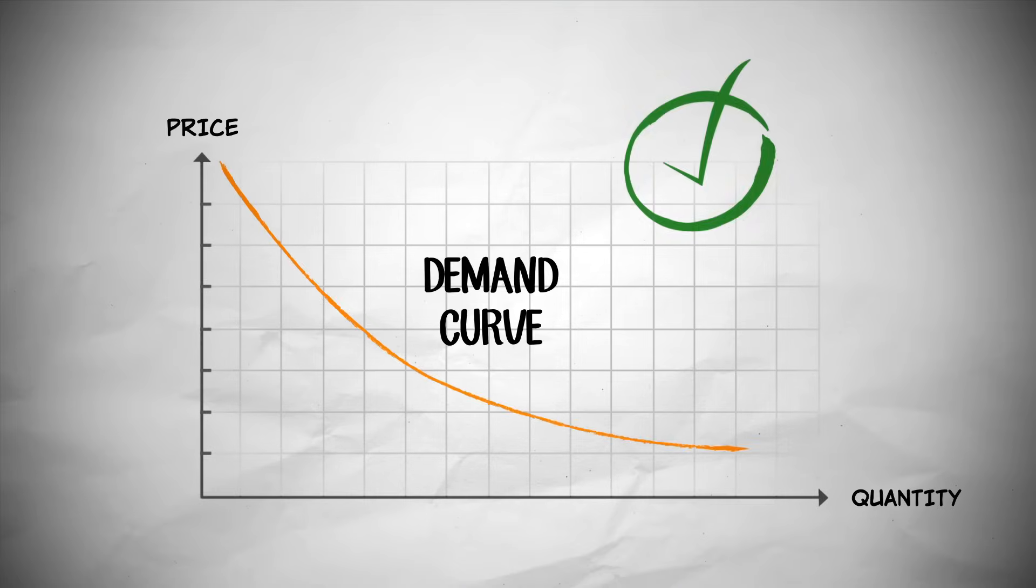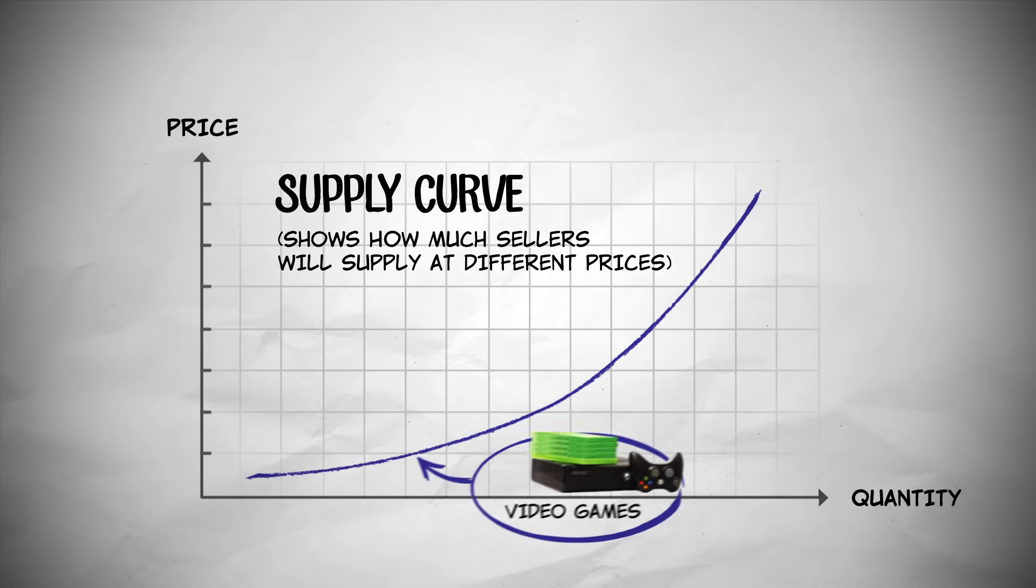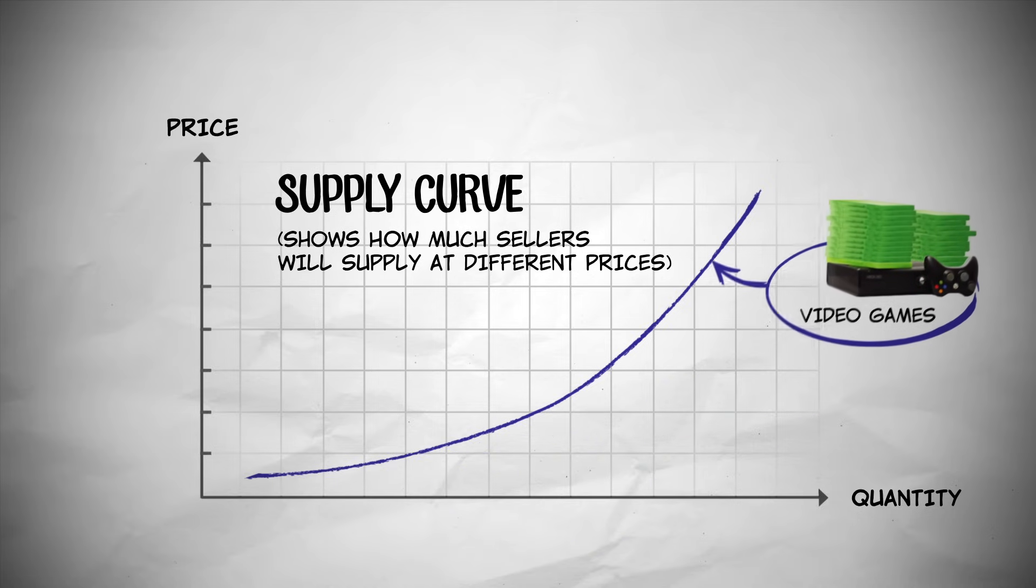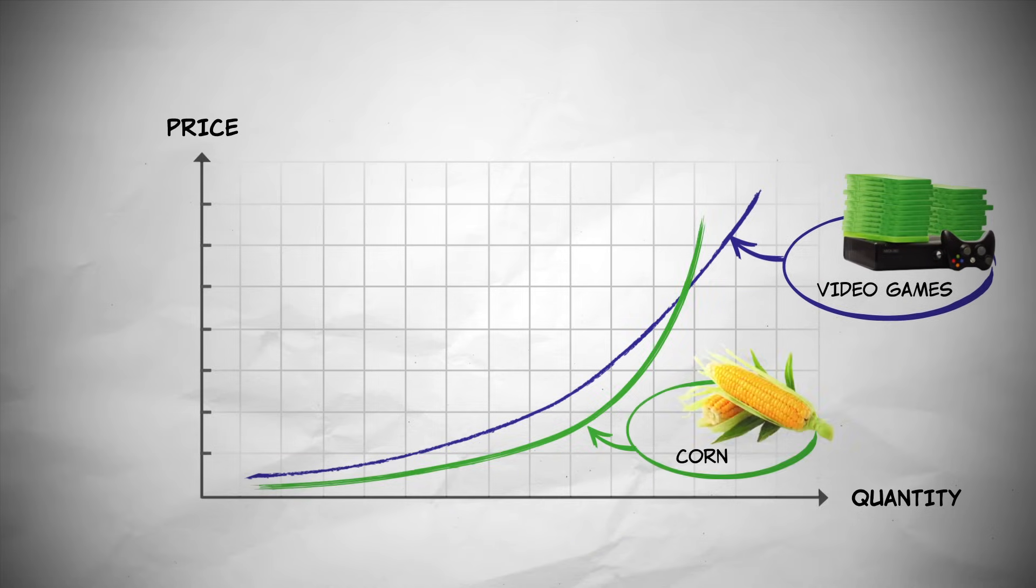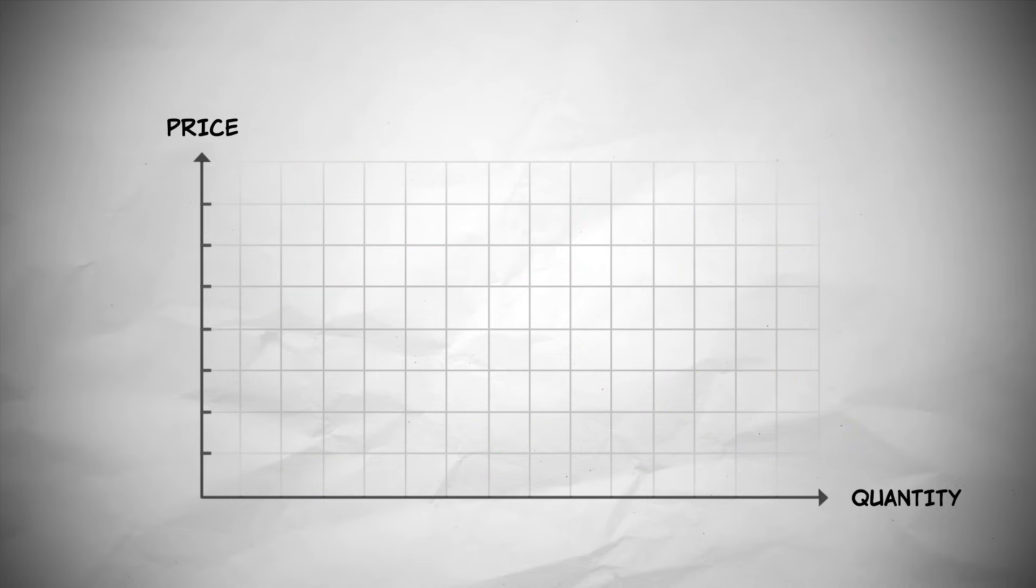Now that we've got the demand curve down, let's move on to the supply curve. A supply curve shows how much of a good suppliers are willing and able to supply at different prices. As with the demand curve, there's a supply curve for every good and service. And again, the ideas are the same, so let's look at the supply curve for oil.